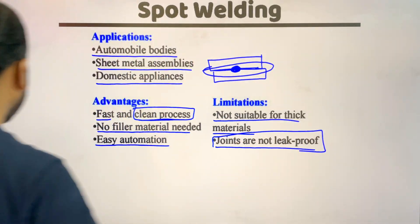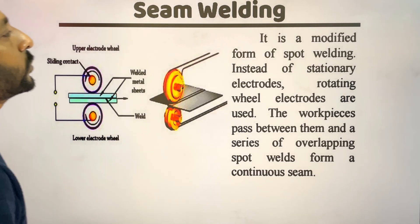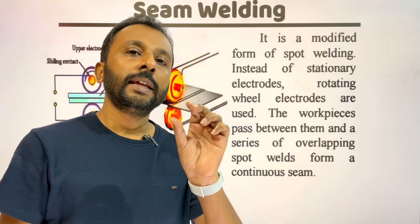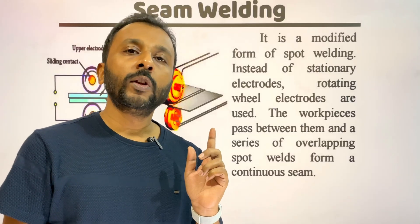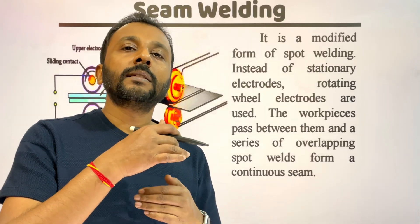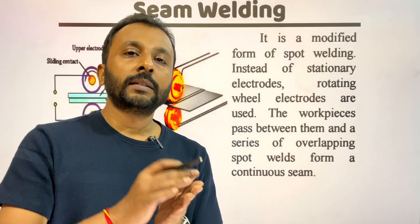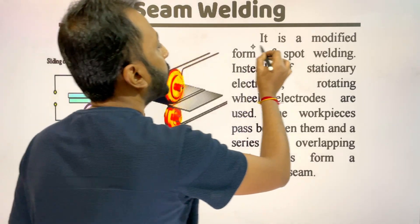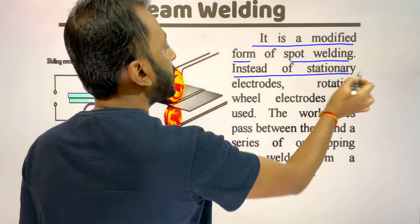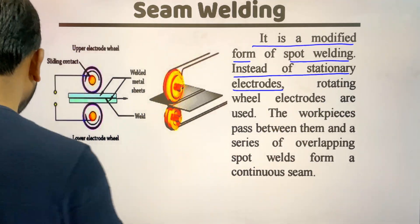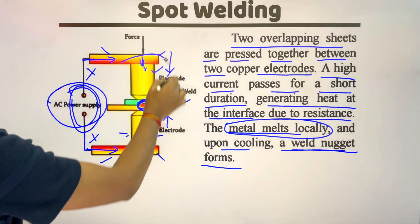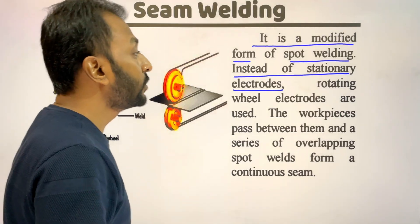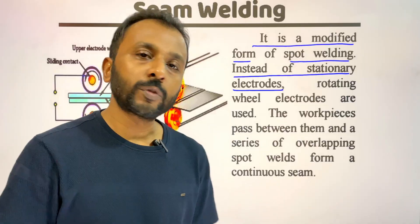The next type is seam resistance welding process. This is a type of spot welding but instead of a single spot, the welding is done between two plates in a continuous way — it may be called continuous spot welding. It is a modified form of spot welding. Instead of stationary electrodes as in spot welding, in seam welding the electrodes are not stationary and are totally different from those used in spot welding.